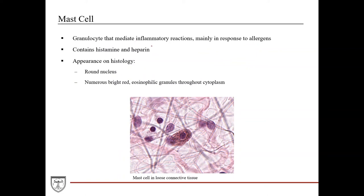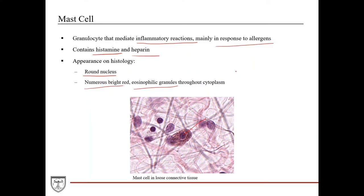A mast cell is a granulocyte that mediates inflammatory reactions, mainly in response to allergens. If someone has a peanut allergy, mast cells would be the main cells mediating that allergic reaction. They contain granules full of histamine and heparin, which mediate inflammatory responses such as significant vasodilation. On histology they have a very round nucleus, and then numerous bright red eosinophilic granules throughout their cytoplasm. To distinguish mast cells from eosinophils — which also have bright red cytoplasm — look at the nucleus: round in mast cells, bilobed V-shape in eosinophils.